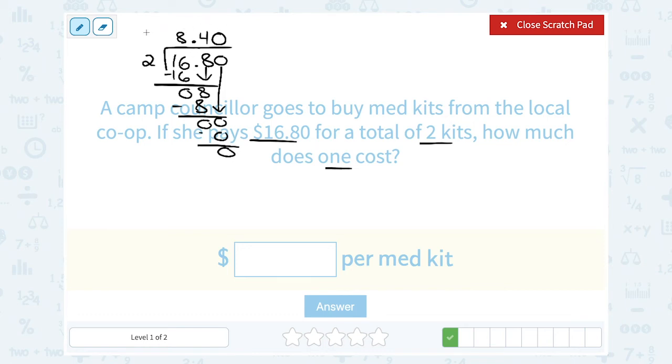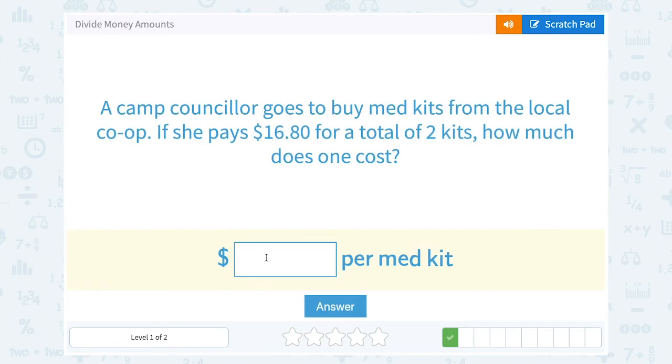$8.40 for one med kit. We want to write that with our dollar symbol. And in this case, they already gave us our dollar symbol. So $8.40 per med kit.